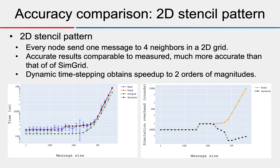For the two-dimensional stencil pattern, which causes less contention, every node sends one message to its four neighbors in a two-dimensional grid. We again obtain very accurate results compared to measured results, performing much better than SimGrid. Dynamic time stepping achieves up to two orders of magnitude speed-up here.